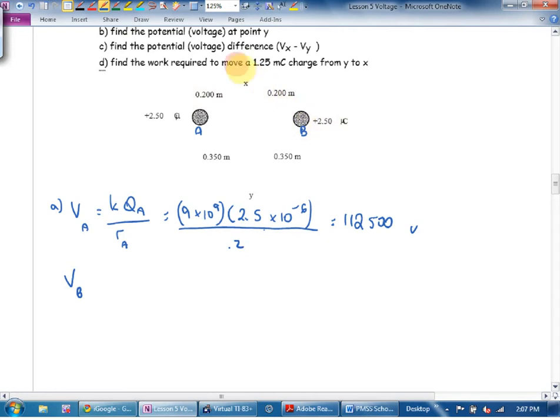And is the distance the same as distance A? In other words, I'm going to say you're going to be putting the same number there and the same number there. I'm just going to say the total voltage at location X is 2 times 112,500. Because both these happen to be identical.